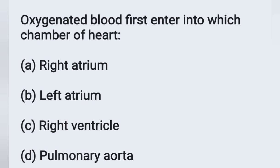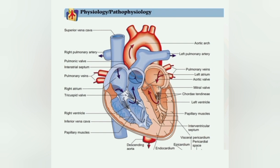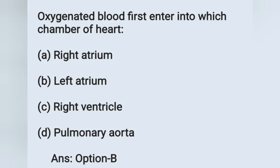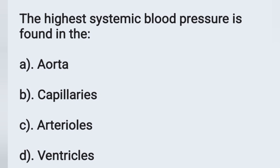Next question: oxygenated blood first enters into which chamber of the heart? Options: (a) right atrium, (b) left atrium, (c) right ventricle, (d) pulmonary aorta. After purification, through the pulmonary veins, the oxygenated blood first enters into the left atrium. Correct answer is option B, left atrium.